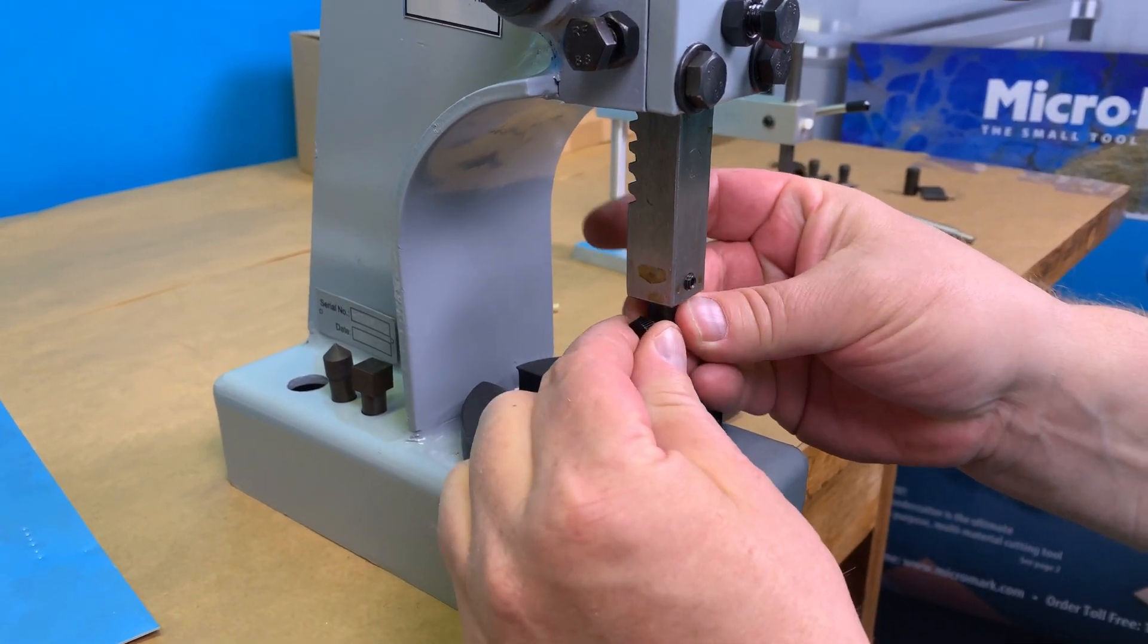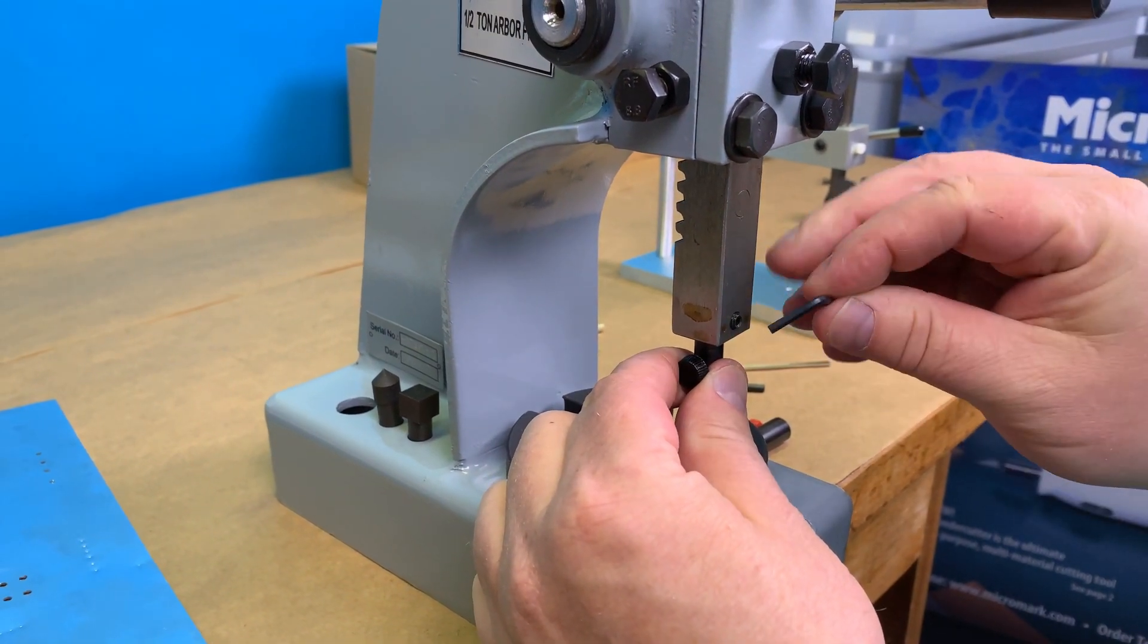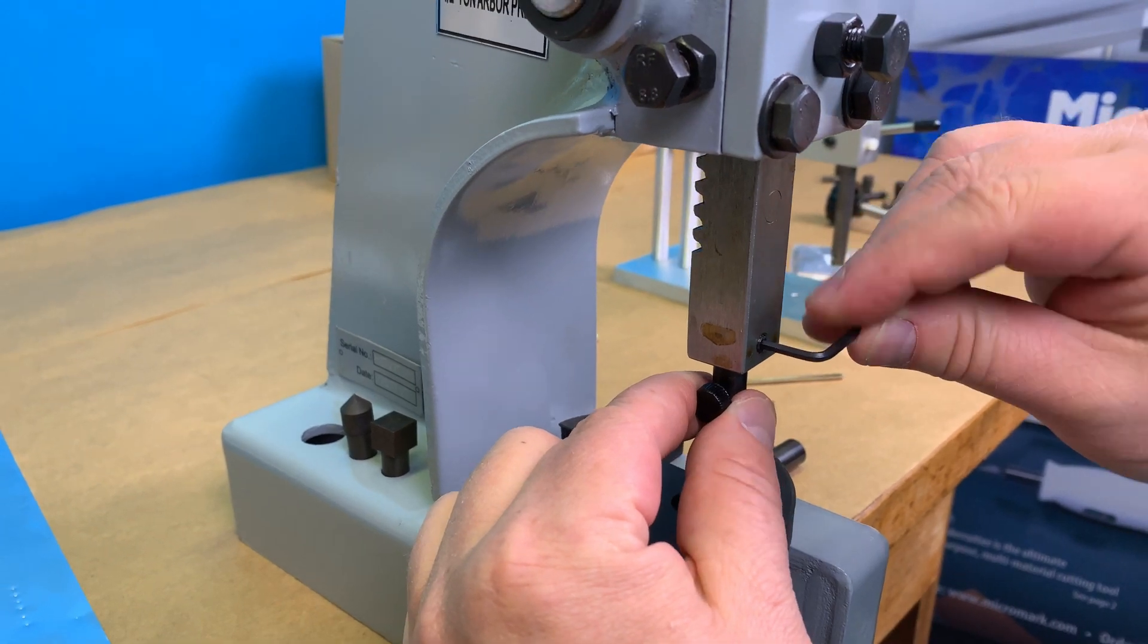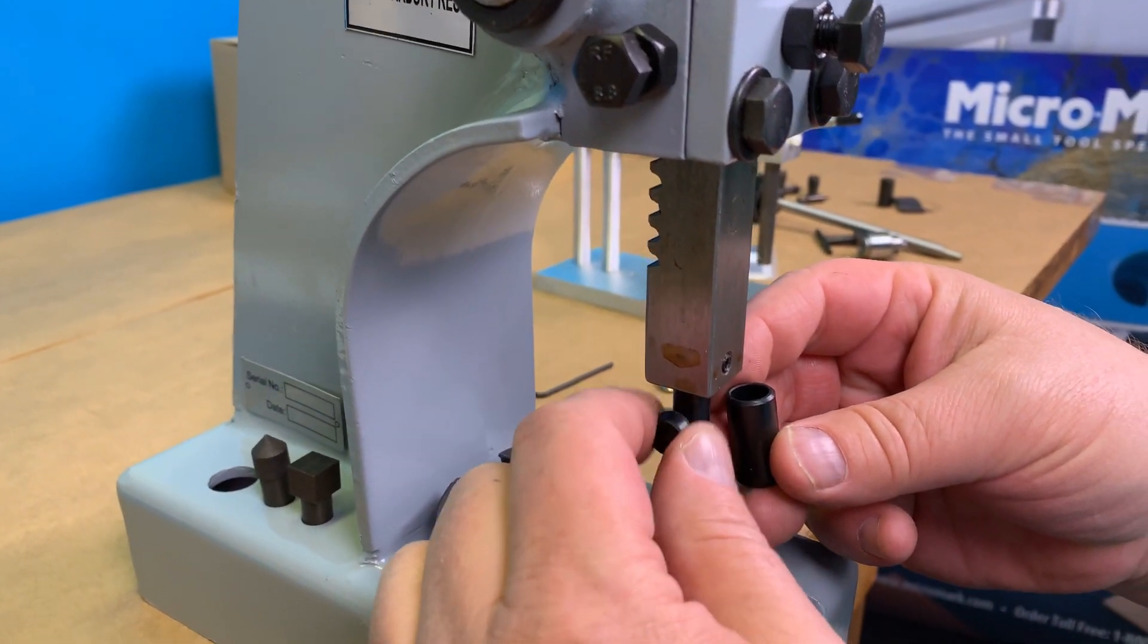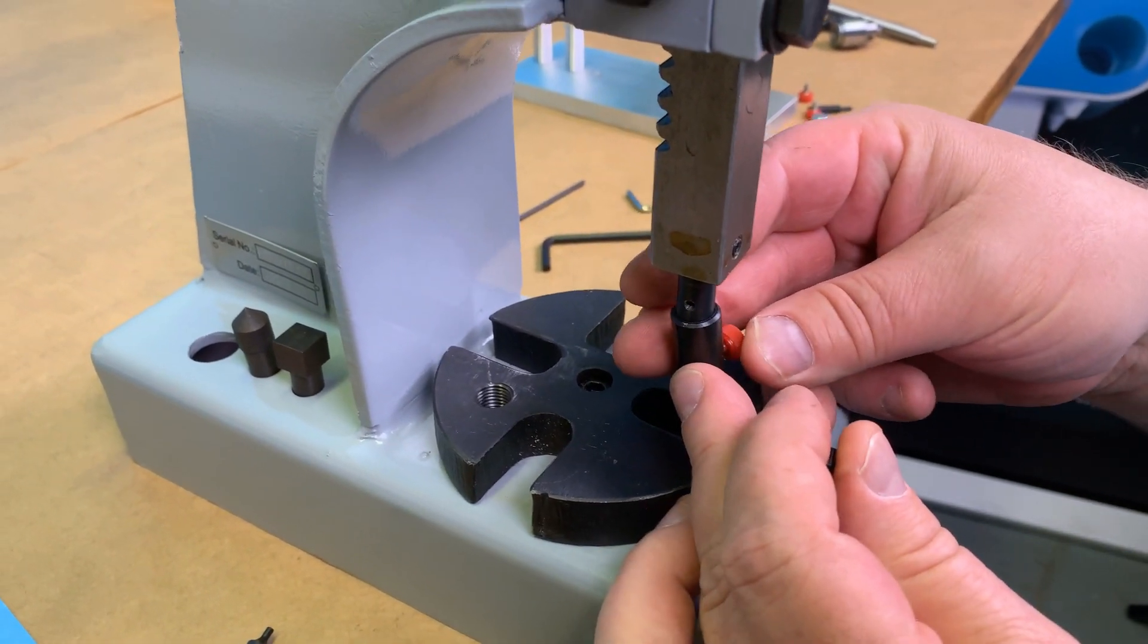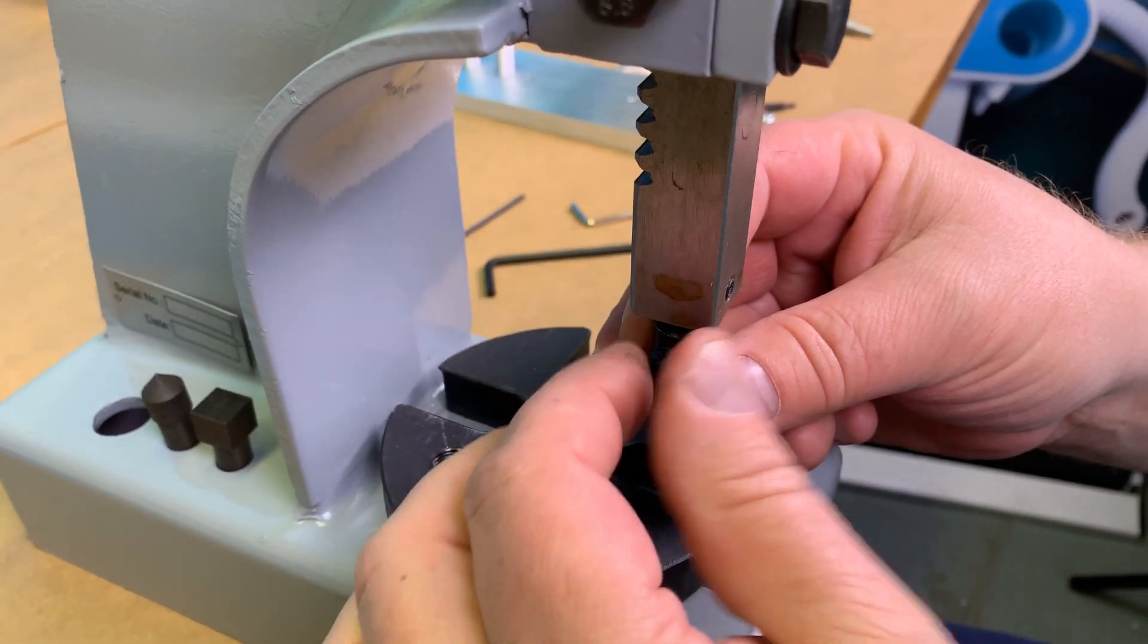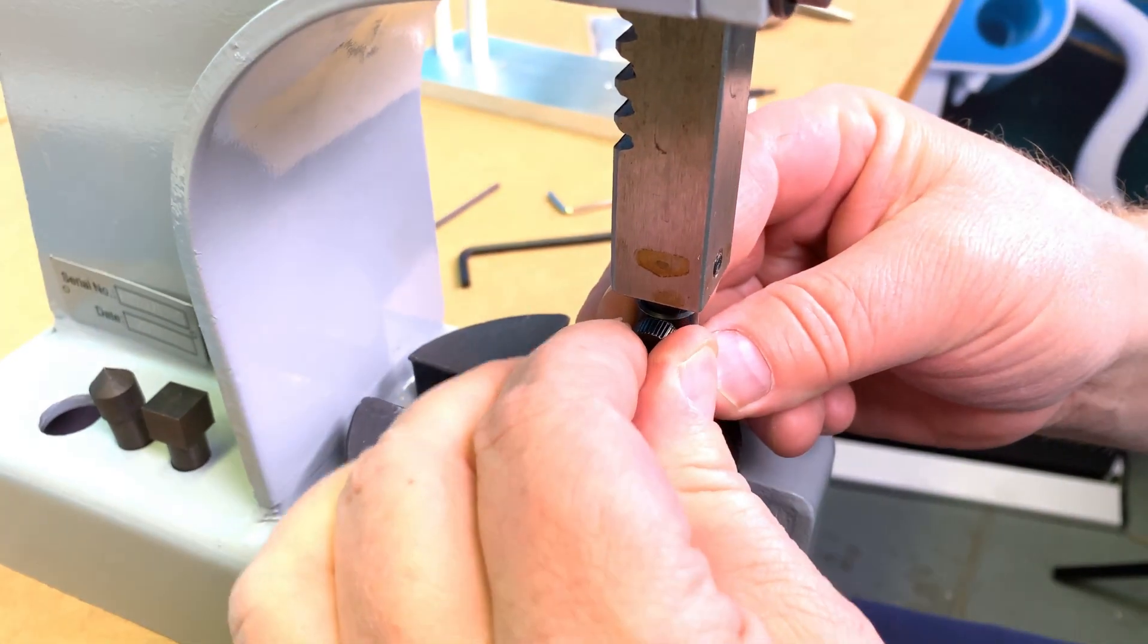This simply slips up inside. It is held in place by the front set screw. You unscrew that cap screw and slip this over. And you'll find the hole and tighten that down firmly.